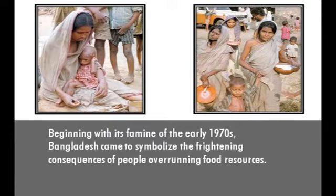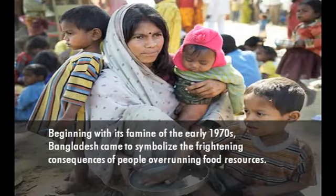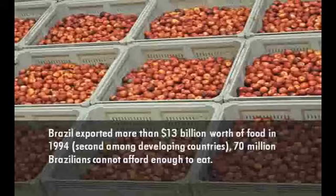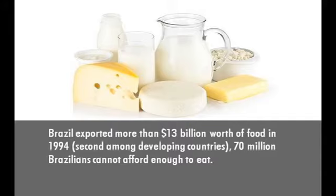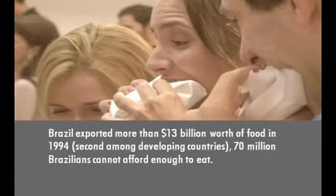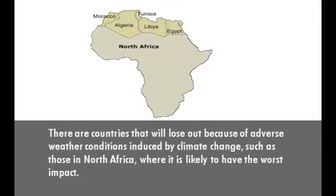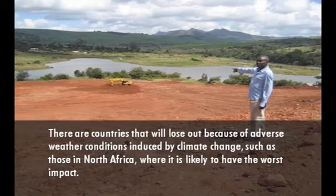Beginning with its famine of the early 1970s, Bangladesh came to symbolize the frightening consequences of people overrunning food resources. Brazil exported more than $13 billion worth of food in 1994, second among developing countries, yet 70 million Brazilians cannot afford to eat. There are countries that will lose out because of adverse weather conditions induced by climate change, such as those in North Africa, where it is likely to have the worst impact.